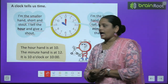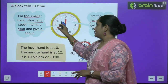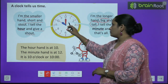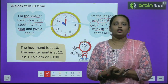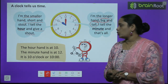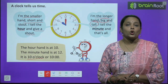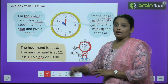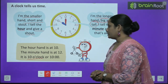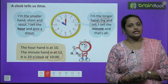The hour hand is at 10 — आप देख सकते हैं कि hour hand कहाँ पे है, 10 पे है। The minute hand is at 12 — और जो minute hand है वो 12 पे है। It is 10 o'clock — तो घड़ी में कितना time हो रहा है? 10 o'clock। जब घड़ी में आपको ये time दिखे, तो आप कहोगे 10 o'clock, या फिर 10:00 — ऐसे भी हम time को लिख सकते हैं।